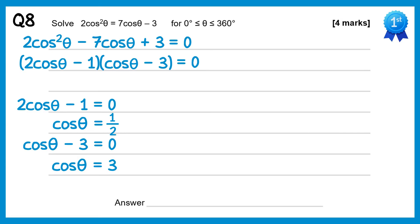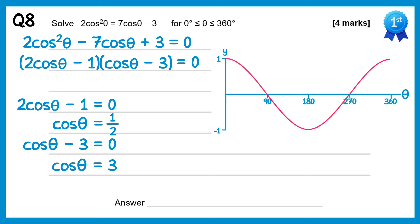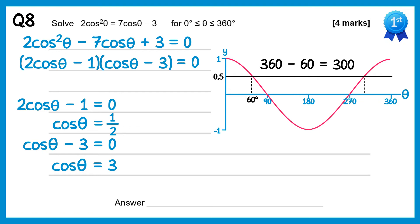Looking at the graph of cosθ: for cosθ equals 1/2, a horizontal line at 1/2 gives two solutions — inverse cos of 0.5 gives 60 degrees, and subtracting from 360 gives 300 degrees. For cosθ equals 3, if you draw a horizontal line at 3, it doesn't cross the cosine graph at all — in fact, inverse cos of 3 gives an error on your calculator. So this equation has no solutions, and the only solutions are 60 and 300 degrees.